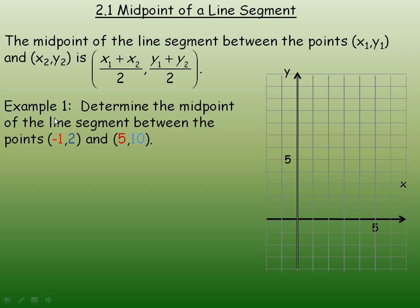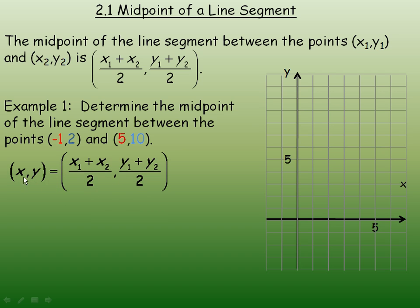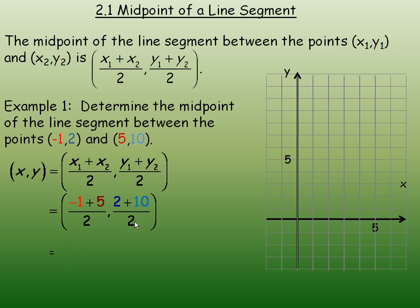In this first example, we're asked to determine the midpoint of the line segment between negative 1, 2 and 5, 10. So we'll start with the formula. The midpoint (x, y) equals the same formulas. For x1 plus x2, we're adding the two x-coordinates: negative 1 and 5. So negative 1 plus 5 divided by 2. And for y1 plus y2, that would be 2 and 10 added, divided by 2. Negative 1 and 5 add to 4, and 2 and 10 add to 12. We divide each by 2 and get the point 2, 6.